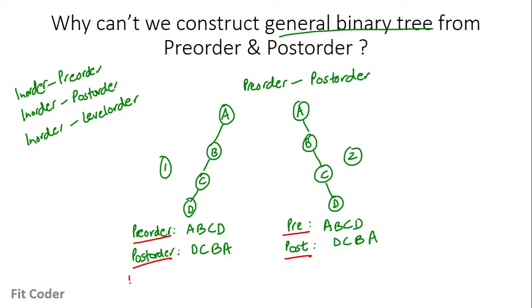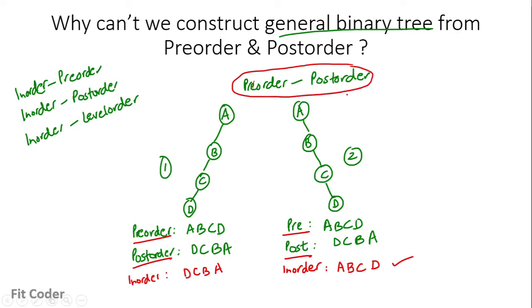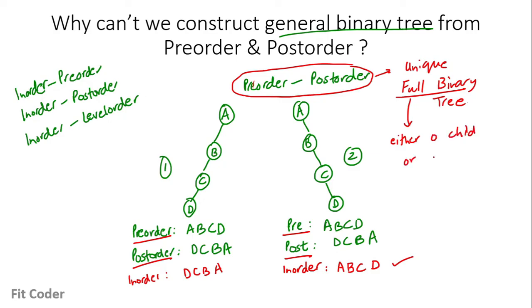If we check the in-order, the in-order for the first tree is DCBA and differs for the second tree. So if we are given in-order and any other traversal, we can construct a unique general binary tree. But when only pre-order and post-order is given, we can construct a unique full binary tree — that is, a tree in which every node has either 0 or 2 children.